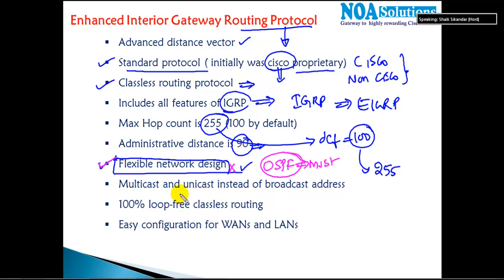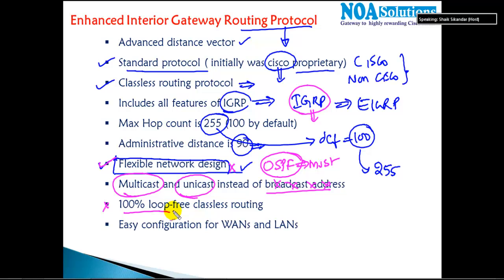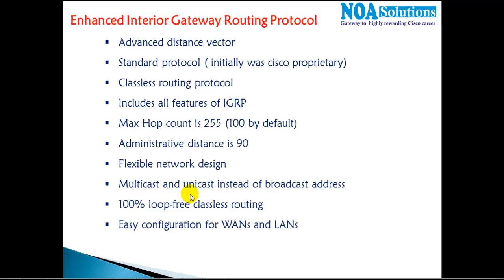There are no more broadcast messages in EIGRP. It uses multicast and unicast messages instead of broadcasting, unlike RIP version 1 which does broadcasts, and IGRP which was also doing broadcasts. EIGRP supports multicast, and there is no routing loop — it supports a 100% loop-free classless protocol. It's also very easy to configure. These are some of the advantages and features of EIGRP that make it a better protocol compared to previous versions.